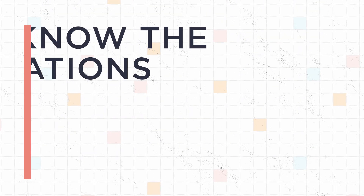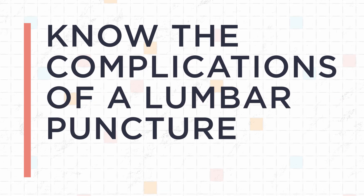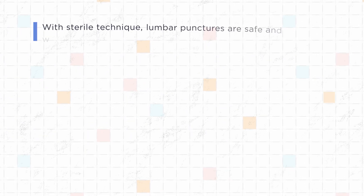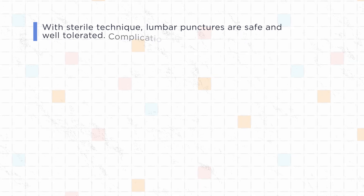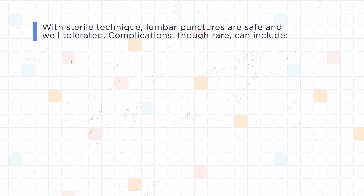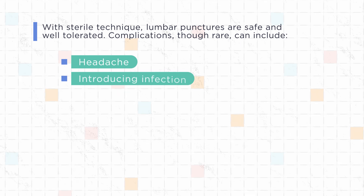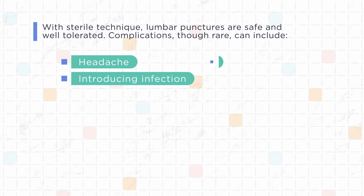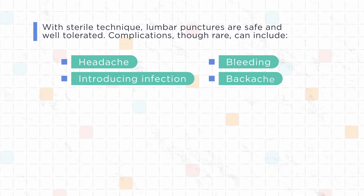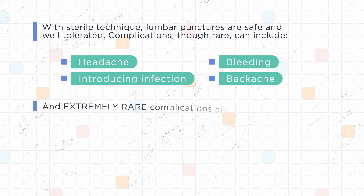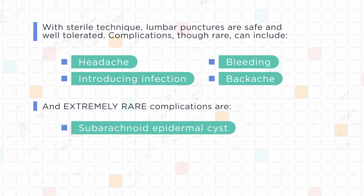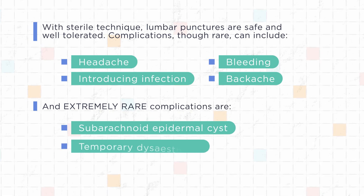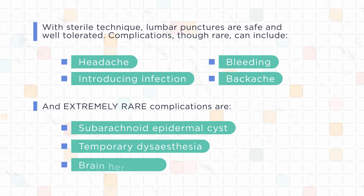Know the complications of a lumbar puncture. With sterile technique, lumbar punctures are safe and well tolerated. Complications, though rare, can include headache, introducing infection, bleeding, and backache. Extremely rare complications are subarachnoid epidermal cyst, temporary dysesthesia, and brain herniation.